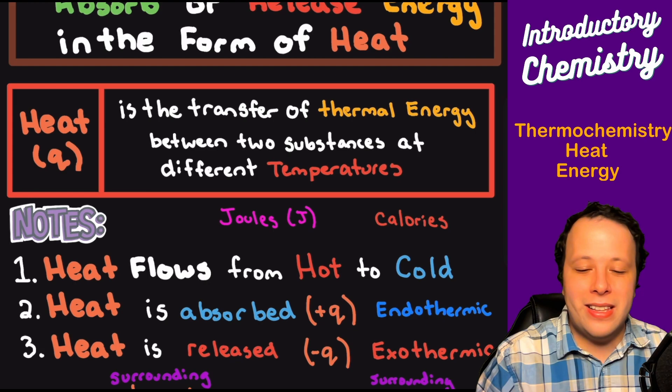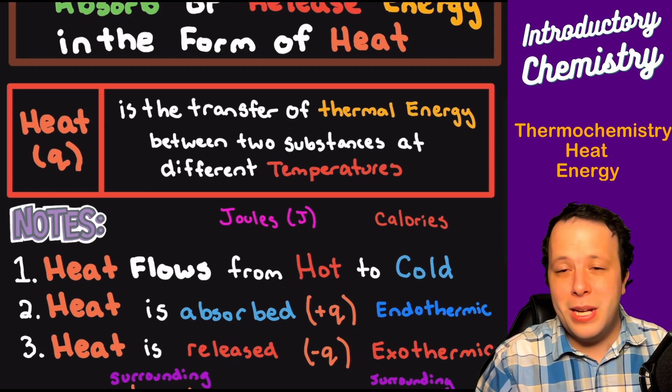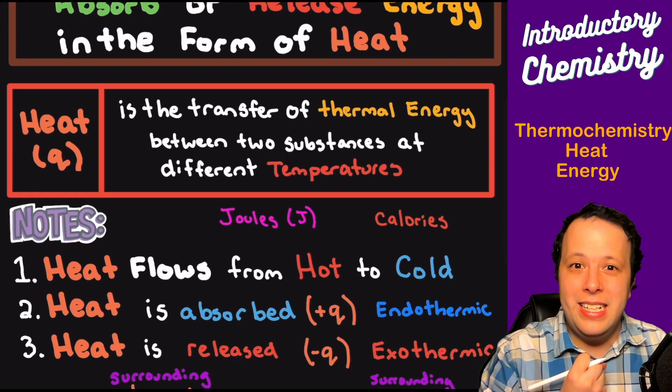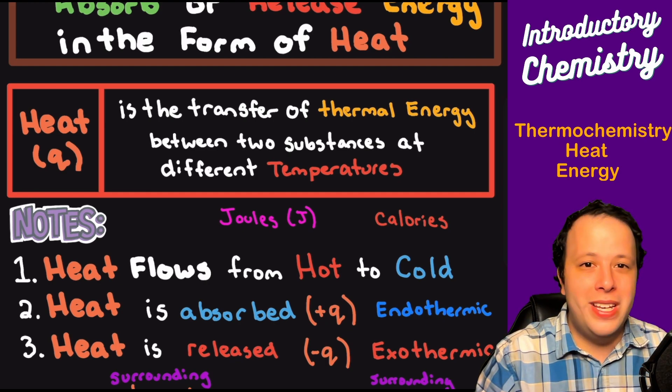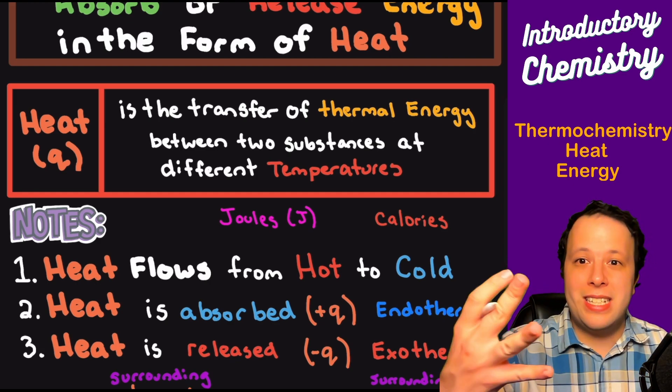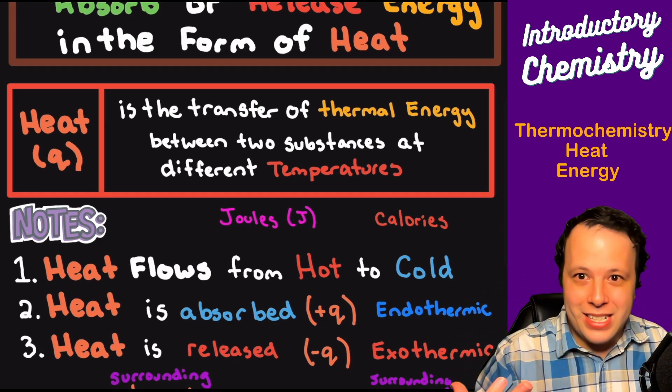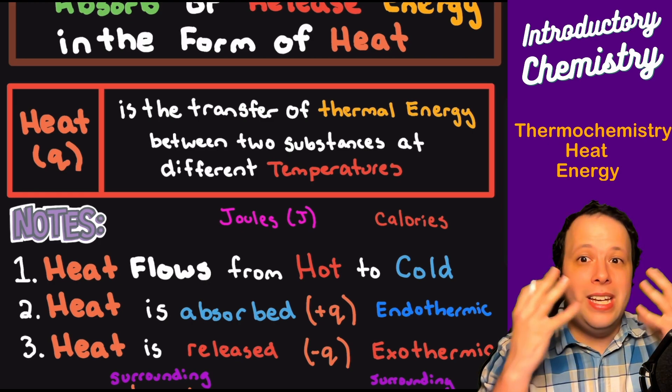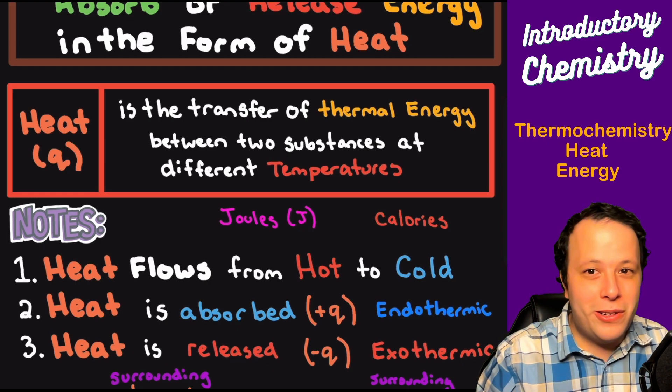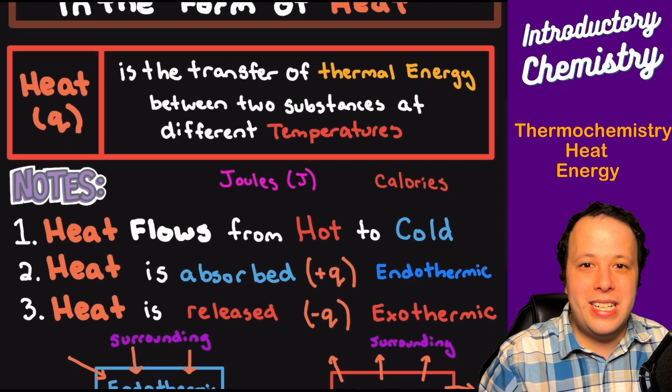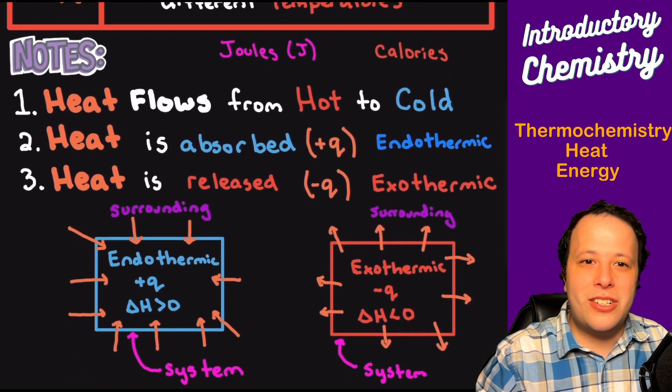This Q value that we're going to define—if it's a positive value, that means heat is being absorbed by your system, and this is endothermic. If heat is being released or coming off of you, you are being exothermic. If you hold your hand close to your face, you can feel the heat coming off of your body. Those are exothermic reactions. You're constantly releasing heat.